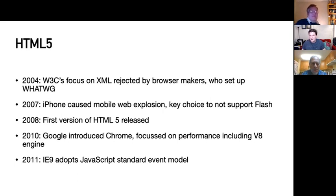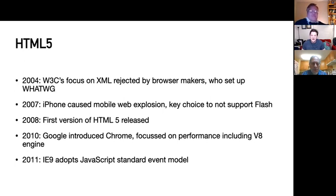That decision to exclude Flash constrained a lot of creativity, possibly for ideological reasons or because Flash would have drained battery life. In 2008, the first version of HTML5 from the WhatWG's efforts was published. In 2010, Google introduced Chrome, focused on performance — making the web quick — because Google decided their future was in the web as a platform. They introduced the V8 engine, a really fast JavaScript implementation that completely blew away the performance of any prior JavaScript engine, enabling far more complex JavaScript applications.